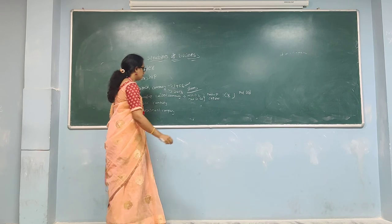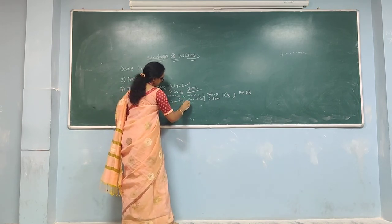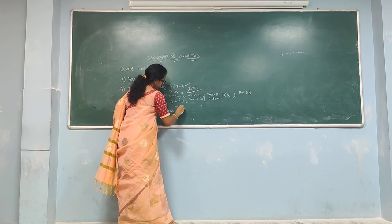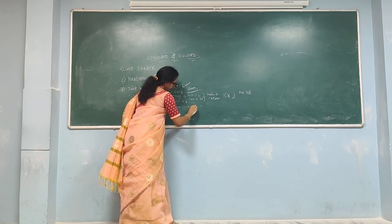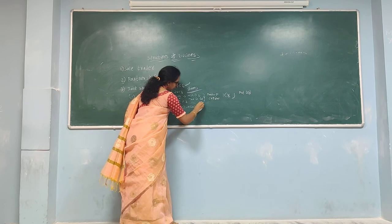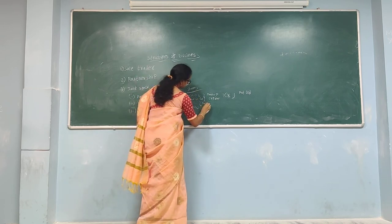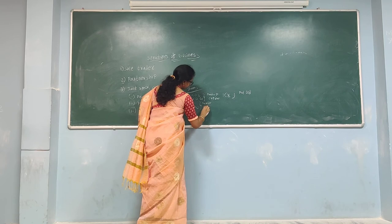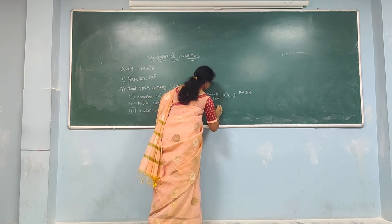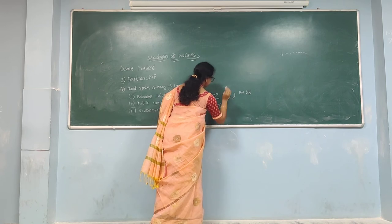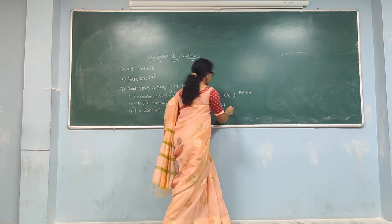Public company: minimum seven members, maximum unlimited. The paid-up capital requirement also applies, and you must mention 'Limited' in the company name.